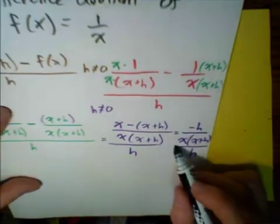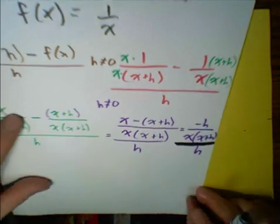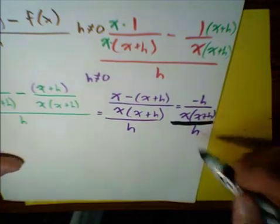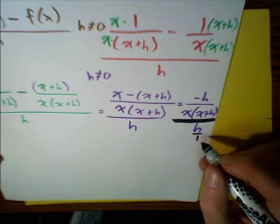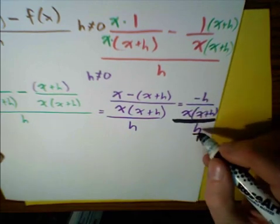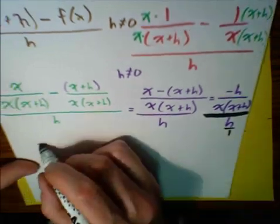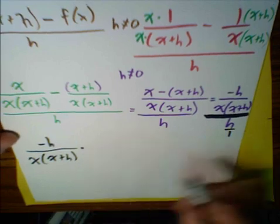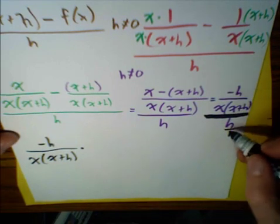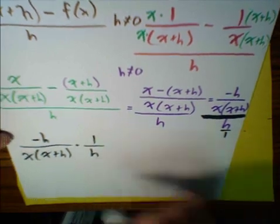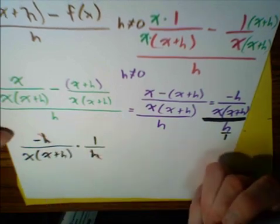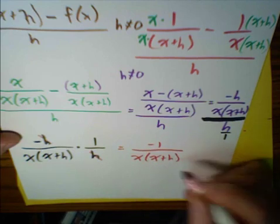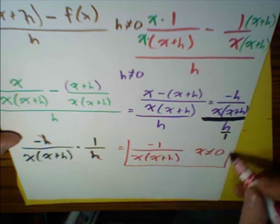To simplify this complex rational expression, we multiply by the reciprocal — instead of dividing by h, we multiply by 1 over h. So we have negative h over x times the quantity x plus h, multiplied by 1 over h. The h's cancel out, and the final answer is negative 1 over x times the quantity x plus h, with the exception that x cannot equal 0.